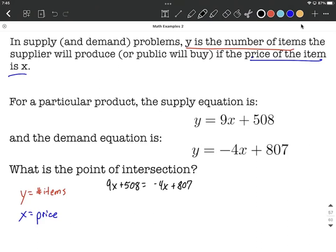We want to solve this down by getting all the variables on one side. I'm going to elect to put these on the left-hand side by adding 4x to both sides. Combining like terms vertically, I have 9x plus 4 more makes 13x. Bring along the 508. These x's get to cancel, make 0. Bring along the 807.